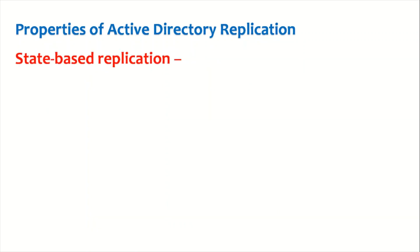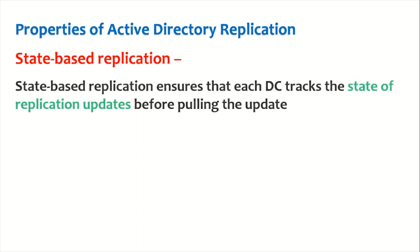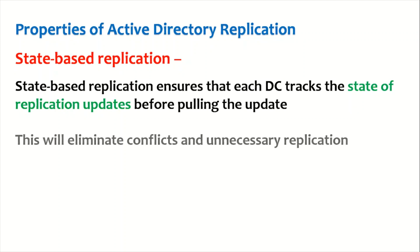Last but not least is state-based replication. State-based replication ensures that each domain controller tracks the state of replication updates before pulling the update. The other domain controller checks the state of the originating domain controller before pulling the update. This eliminates conflicts and unnecessary replication.